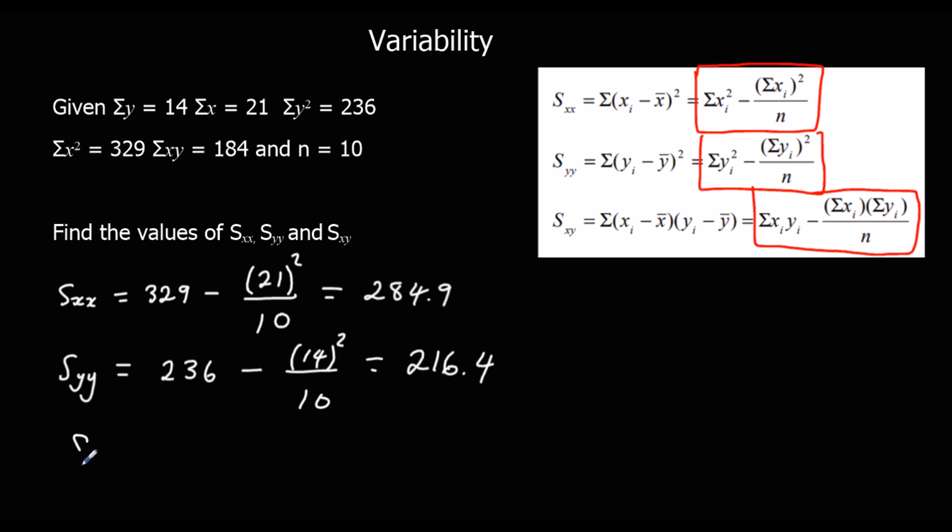And finally, SXY, which is the sum of the XY's, which is 184, minus the sum of the X times the sum of the Y, so 21 times 14, divided by how many, which is 10 still. And we get 154.6.